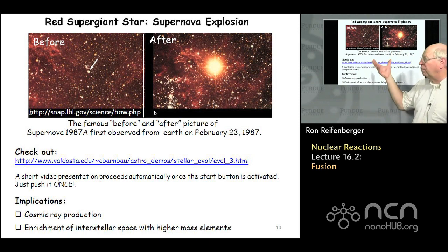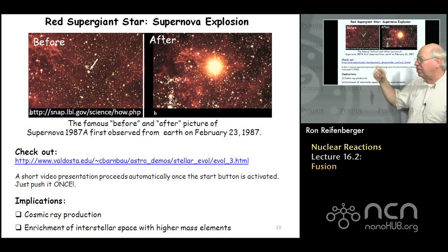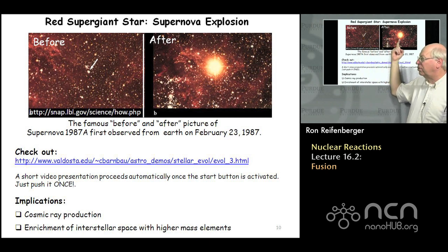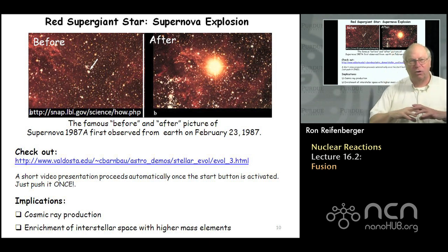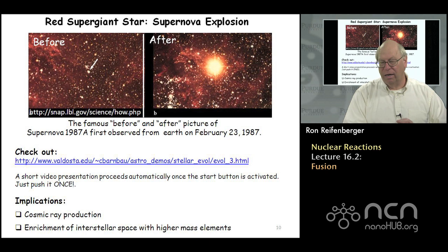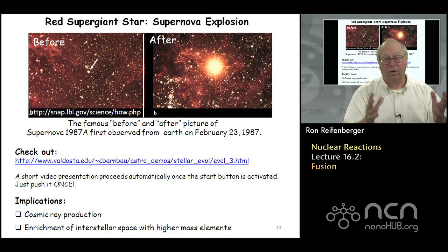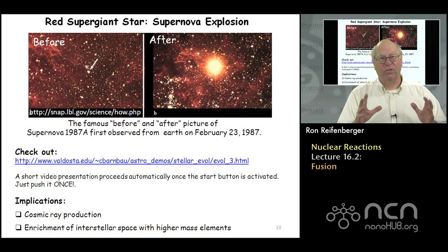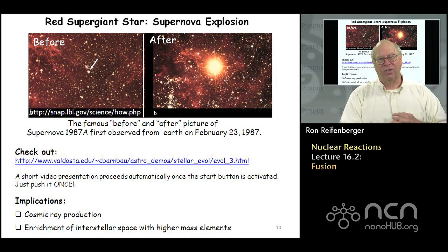There have been a few supernovas observed experimentally — notably one in 1987. The supernova explosion blows off all the elements produced by fusion, dispersing them throughout space. These elements can then condense to form planets and solar systems similar to our own. Supernova explosions are incredibly intense bursts of energy, and explaining and describing these processes remains a topic of considerable interest to astronomers.